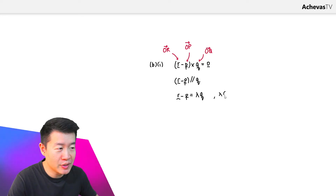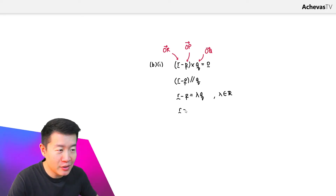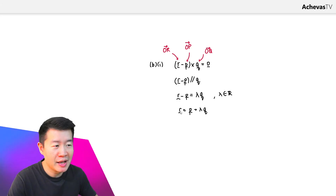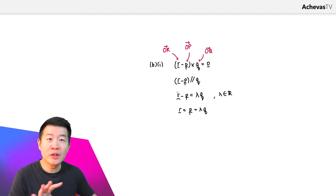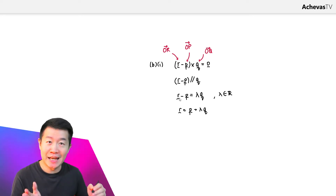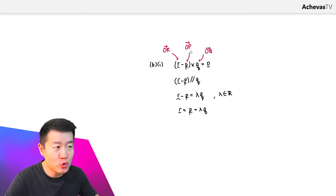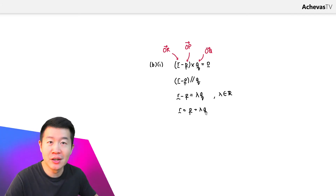Where lambda, introduced here, is just any real number. This means I can rewrite r as p plus lambda q. Since r represents the position vector of point R, this equation tells us that the set of positions of point R is all the points lying on a line passing through point P and parallel to the vector q.